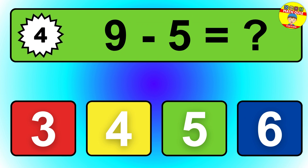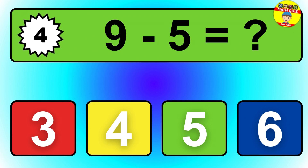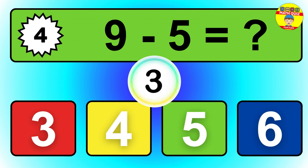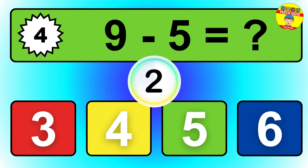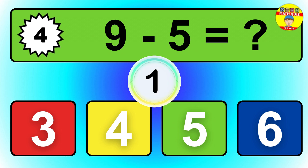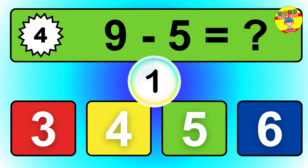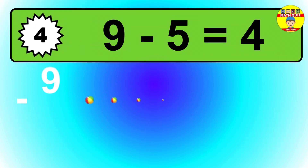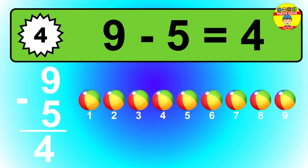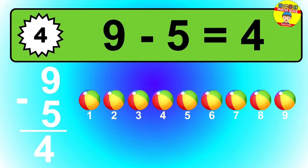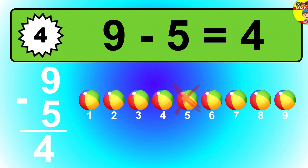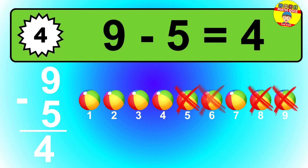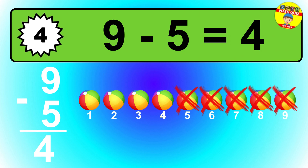Question 4. 9 minus 5 equals what? So the answer is 9 minus 5 is 4. Let's count it: 1, 2, 3, 4.